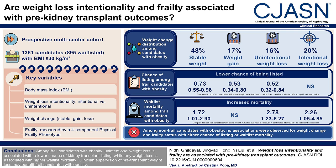Frail candidates with obesity who maintained stable weight had a 27% lower chance of being listed compared to non-frail candidates with stable weight. Weight gain and unintentional weight loss were associated with a significantly reduced likelihood of listing and higher waitlist mortality among frail candidates. Intentional weight loss did not significantly affect listing chances but was associated with higher waitlist mortality in frail candidates.